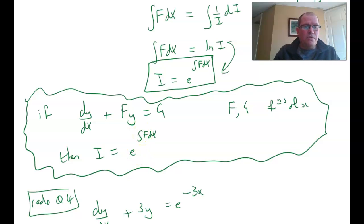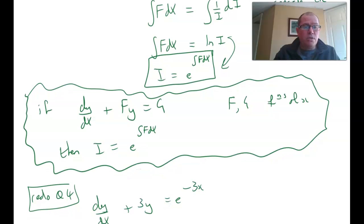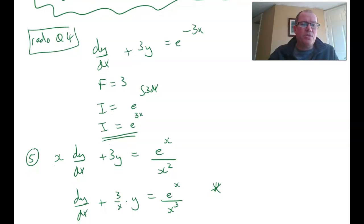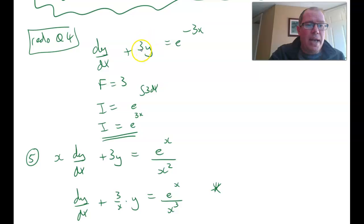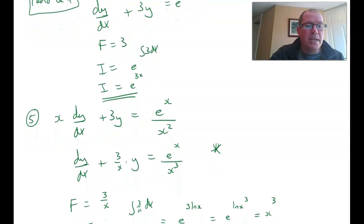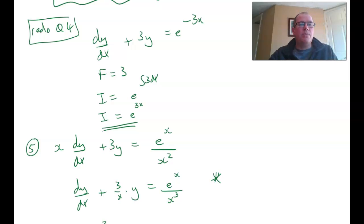Let's redo question 4 using this method. We had dy/dx plus 3y equals e to the power of minus 3x. We know that f is 3, so the integrating factor is e to the integral of 3 dx, which gives i equals e to the power of 3x. Then if you multiply both sides by e to the power of 3x, it will give the answer. I'm going to pause the video and let you try that.